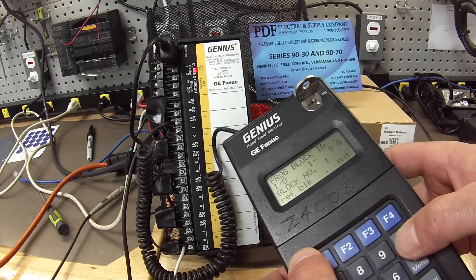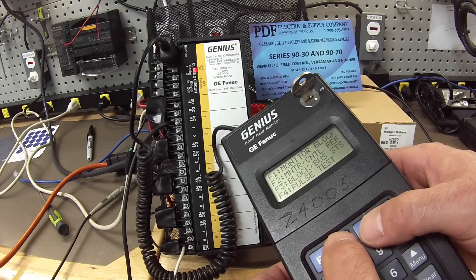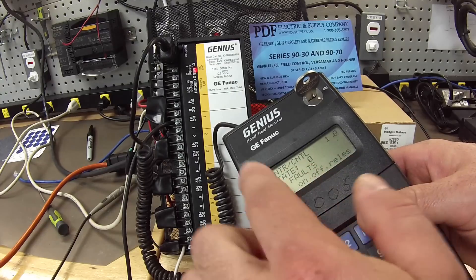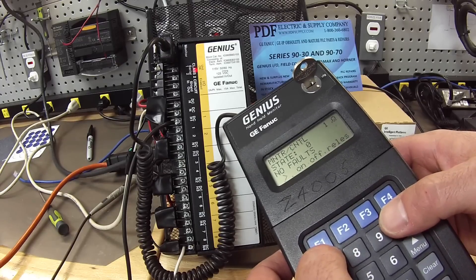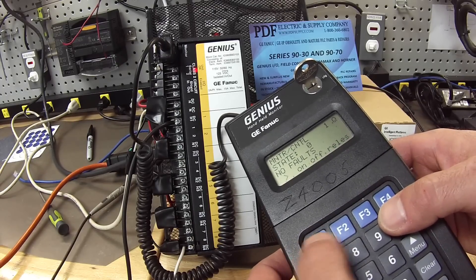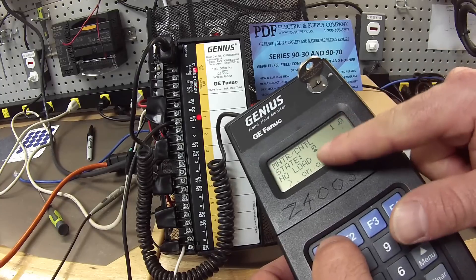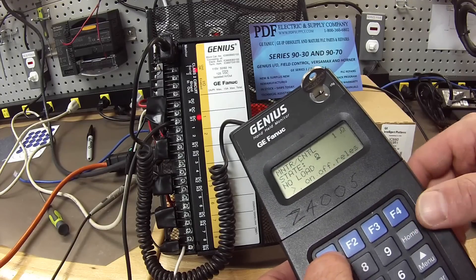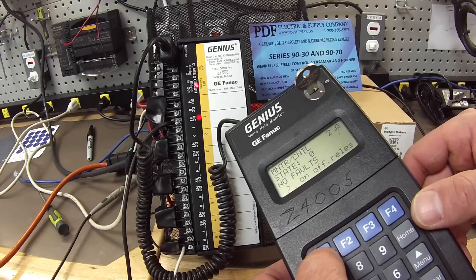Alright, I'm going to go to home, F2 for analyze again. F2 to control the different outputs. Then what I'm going to do here is use the F1 and F2 key. F2 turns the output on. There's an underline under the zero, that means that the state is that it's on.